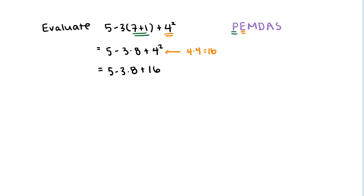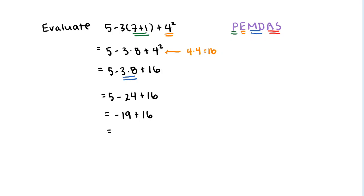Now we have multiplication to perform. In this example, 3 times 8 gives us 24, plus 16. And lastly, we perform the addition and subtraction from left to right: 5 minus 24 is negative 19, plus 16. Negative 19 plus 16 gives us negative 3.